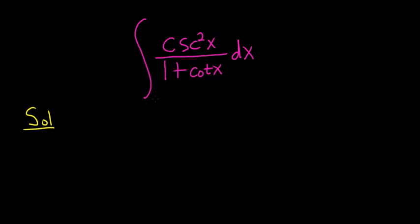We know that the derivative of cotangent is negative cosecant squared. So there is a cosecant squared in the numerator, so a good idea might be to let the entire bottom piece be 1 plus cotangent x. Let's try it.